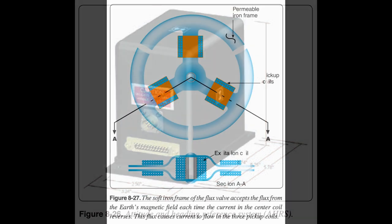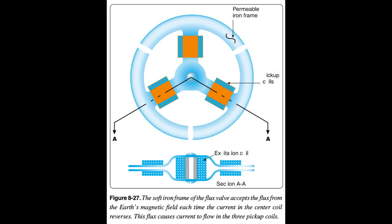The lines of flux in the Earth's magnetic field have two basic characteristics: a magnet aligns with them, and an electrical current is induced in any wire crossed by them. The flux gate compass that drives slaved gyros uses the characteristic of current induction. The flux valve is a small, segmented ring made of soft iron that readily accepts lines of magnetic flux. An electrical coil is wound around each of the three legs to accept the current induced in this ring by the Earth's magnetic field. A coil wound around the iron spacer in the center of the frame has 400 Hz alternating current (AC) flowing through it.